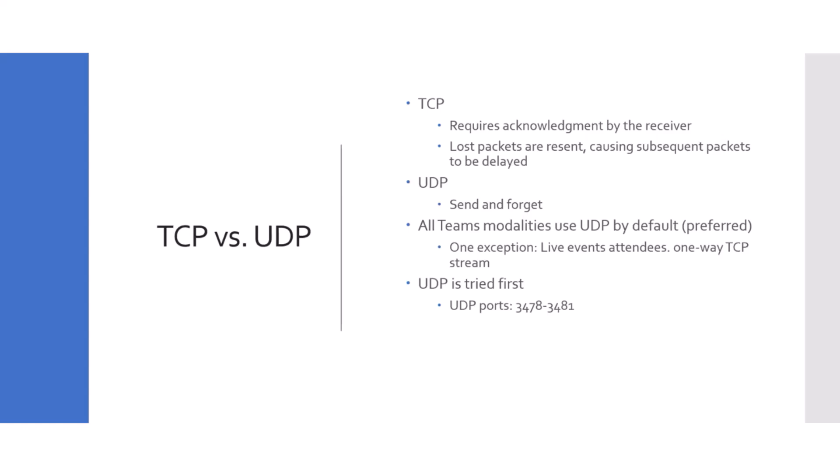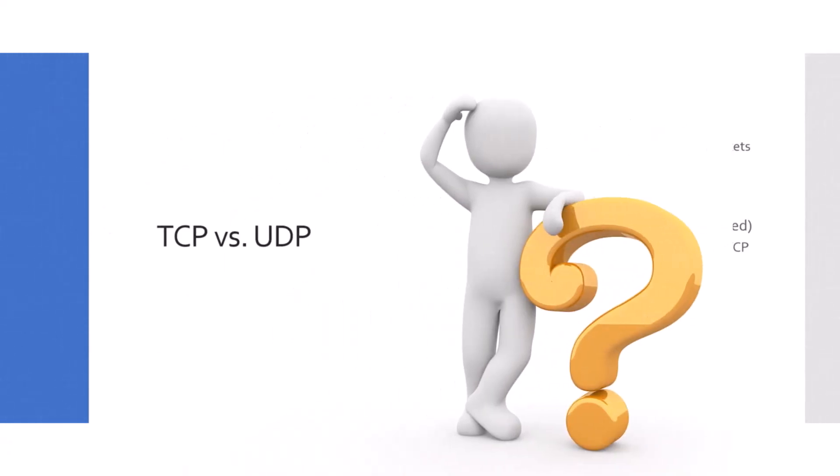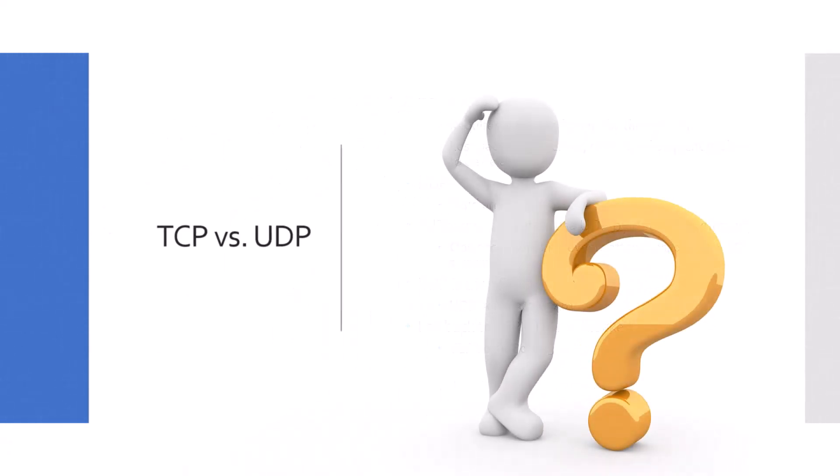UDP ports 3478, 3479, 3480, and 3481 are the UDP ports used by Teams for audio, video, screen sharing, and live events. These are tried first. If they fail or are blocked, we fall back to TCP on only two ports: 80 and 443. To recap: UDP is the preferred protocol for all Teams modalities; the only exception is live event attendees using TCP. UDP ports 3478–3481 are tried first, and if that doesn't work we fall back to TCP ports 80 and 443.